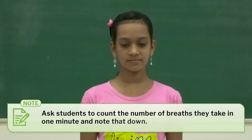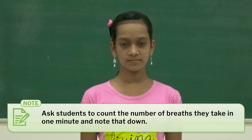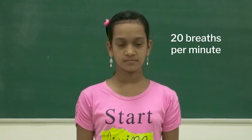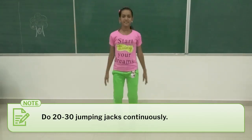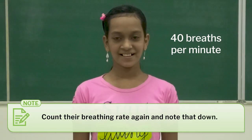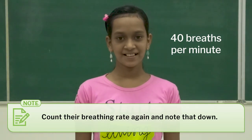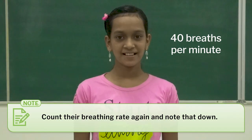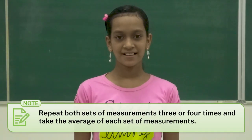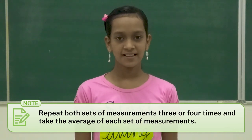I started my class by asking students to count the number of breaths they take in 1 minute and note that down. You can do this activity either inside or outside of the classroom. Ask them to do 20 to 30 jumping jacks continuously, then count their breathing rate again and note that down. Repeat both sets of measurements 3 or 4 times and take the average of each set.